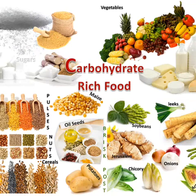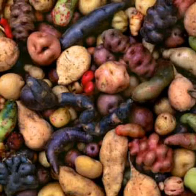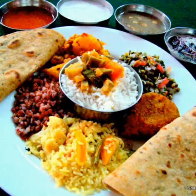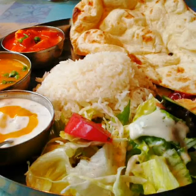Starch is found in plant seeds like cereals and legumes, and in roots and tubers. Those foods are the primary energy sources in human dietary. The intake of complex carbohydrates in the form of cereals, dals, and legumes in a normal Indian diet is sufficient.